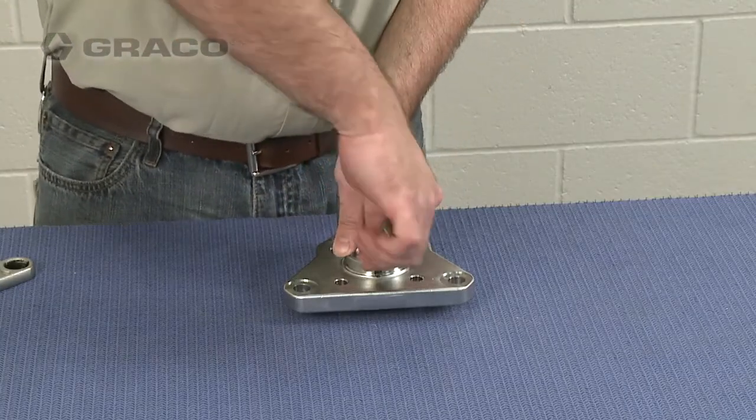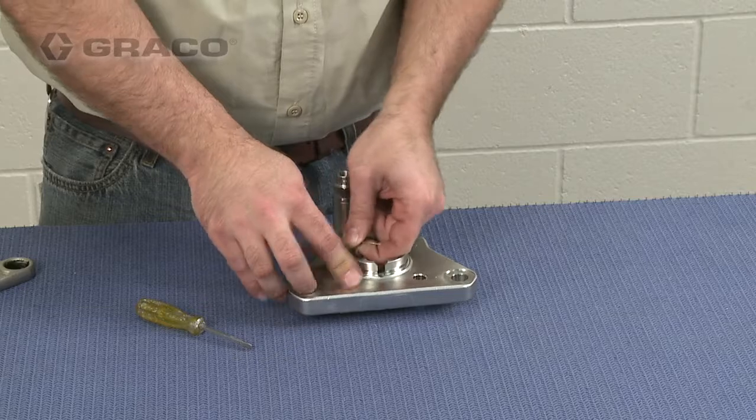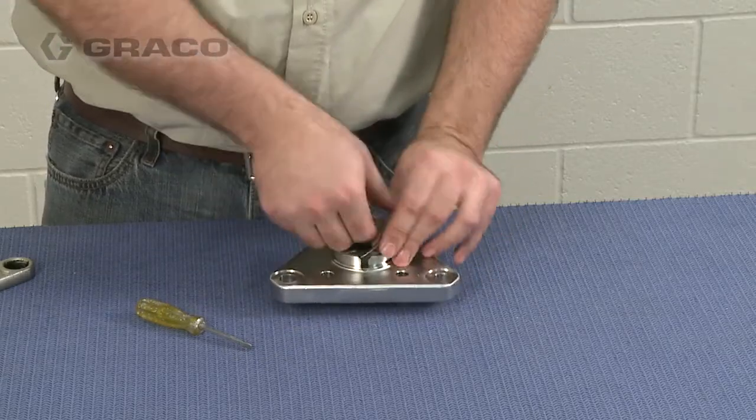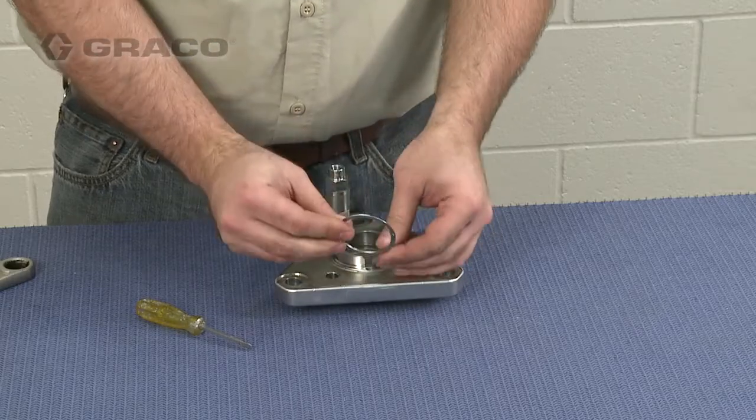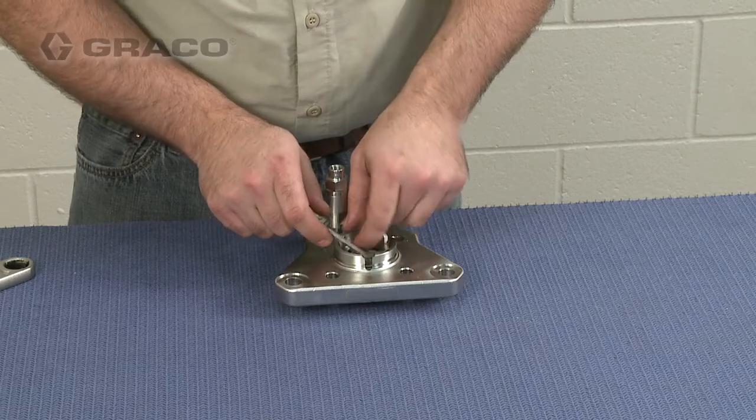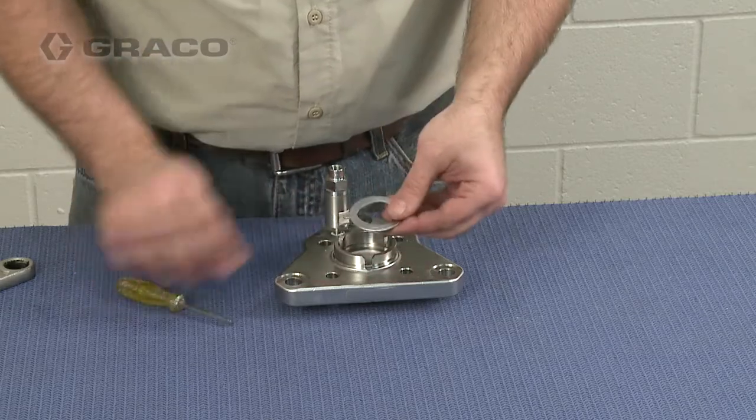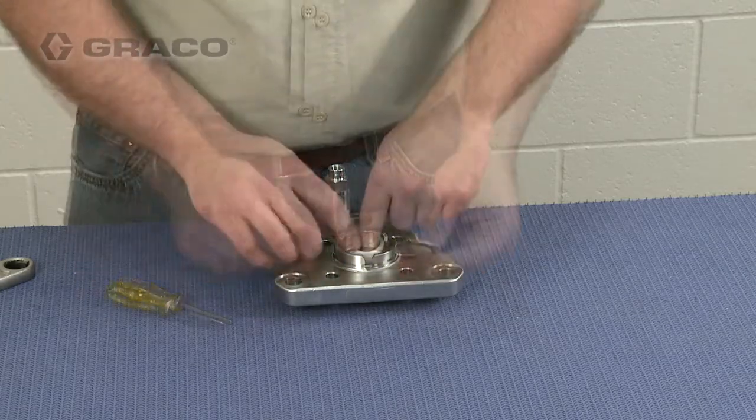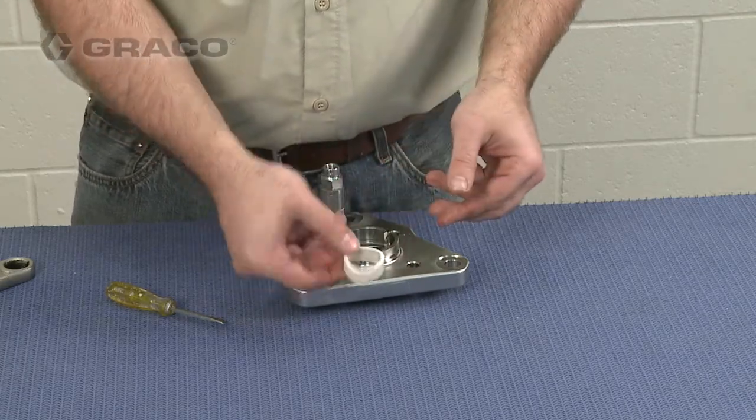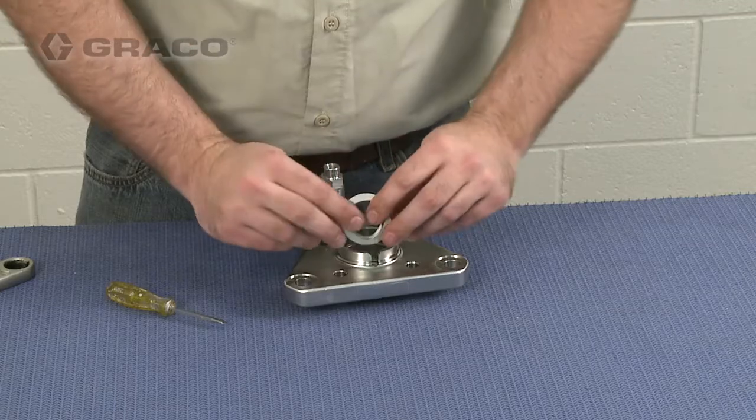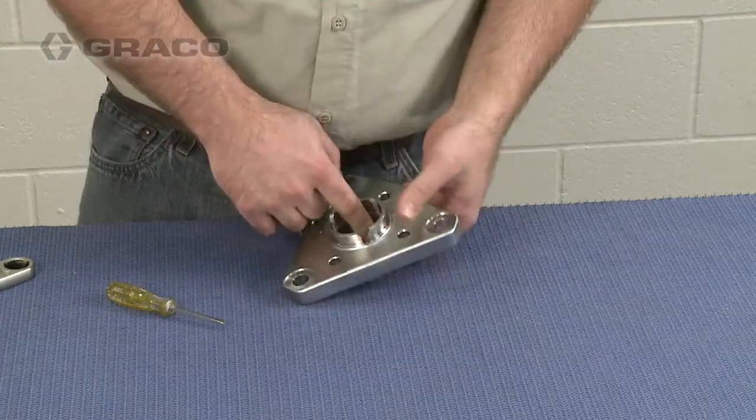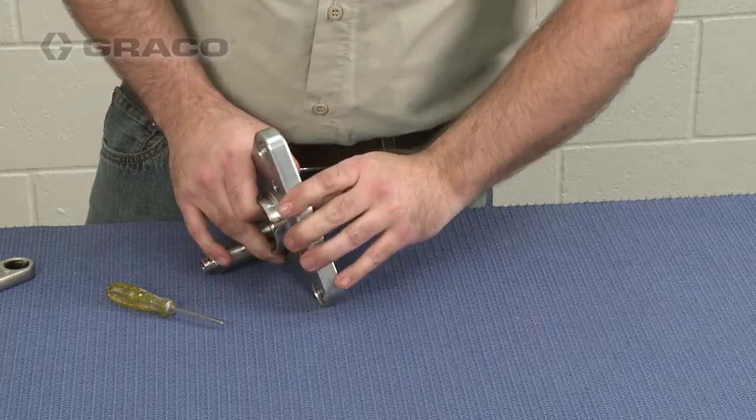Then, remove the retaining ring, retaining washer, bearing, bearing housing, and the backup seal from the top plate.